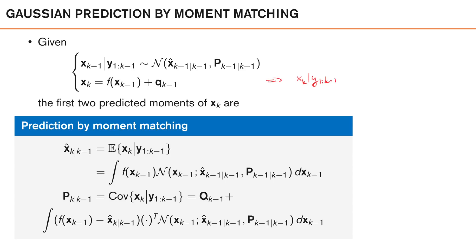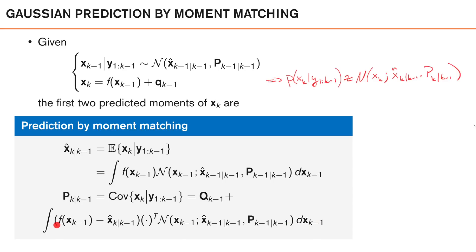The connection to the moment matching principle is that we have a density p of x_k given y_1 to k-1, which we approximate as a Gaussian distribution with the same mean and covariance as the possibly non-Gaussian predicted density. Both integrals have a similar form: a function times a Gaussian that we integrate. As we will see later, all the integrals we need to solve can be written in this form, which will come in handy when we want to find good approximations of these integrals.